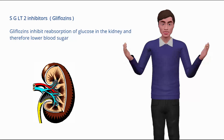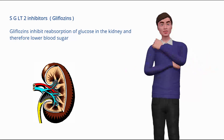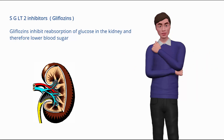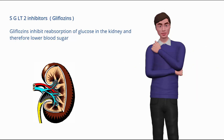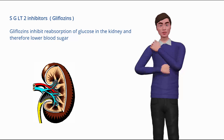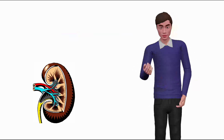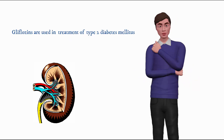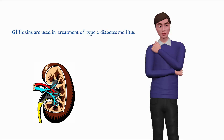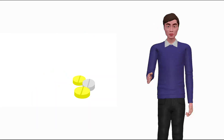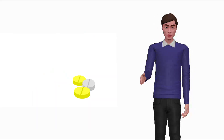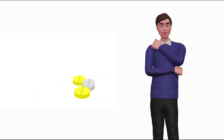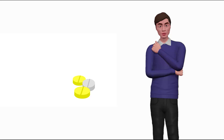SGLT2 inhibitors, also called gliflozins, inhibit reabsorption of glucose in the kidney and therefore lower blood sugar. Gliflozins are used in the treatment of type 2 diabetes mellitus. The most common gliflozins are dapagliflozin, empagliflozin, and canagliflozin.